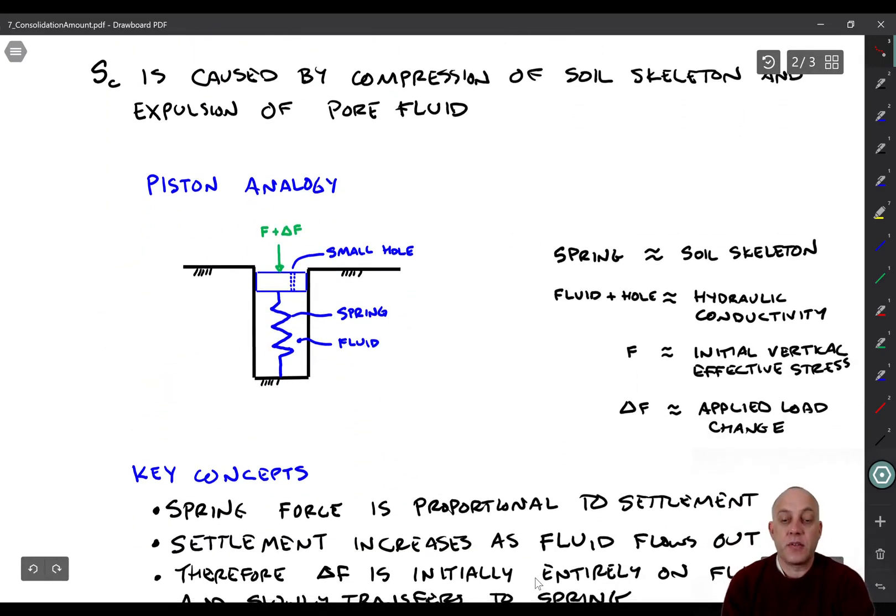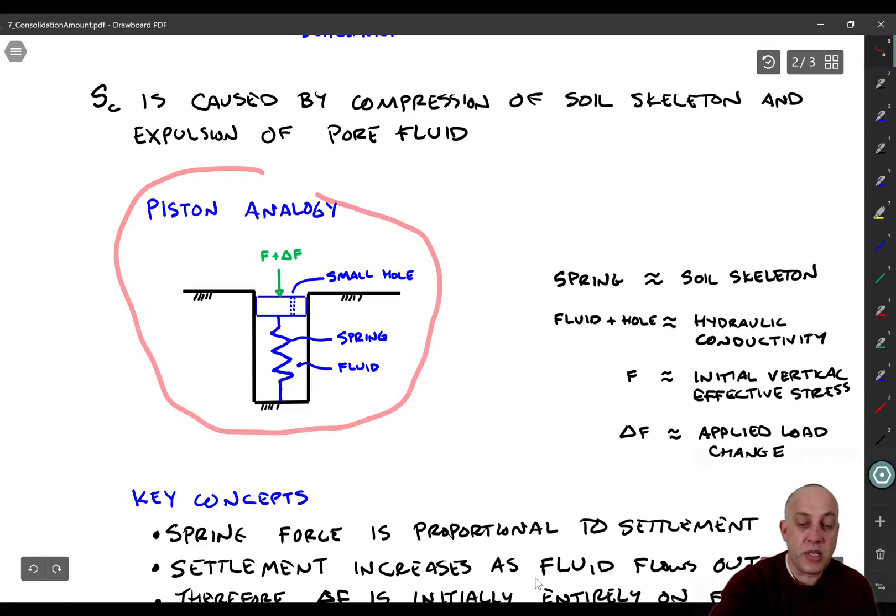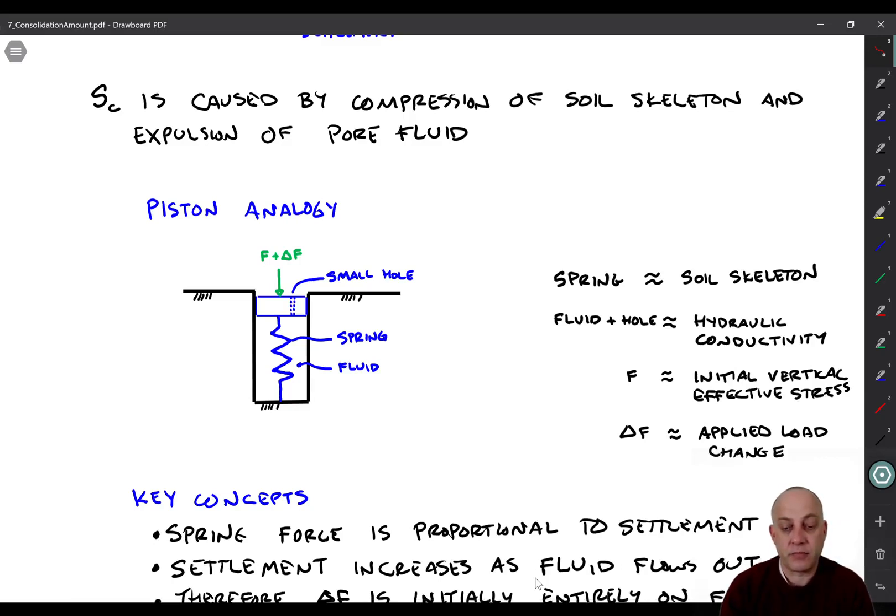Alright, let's move on to consolidation now. So consolidation is caused by compression of the soil skeleton and the resulting expulsion of pore fluid. Basically, you load the soil, it wants to get denser, in order for it to get denser, water has to leave, right? So there's an analogy that I'll show here. So it's like a piston pushing against a spring, and the cylinder is filled up with a fluid, and there's a small hole in the top of the piston that allows the fluid to drip out slowly.